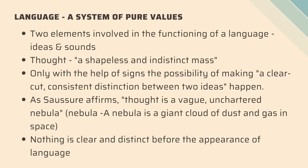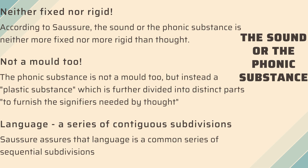A nebula is a giant cloud of dust and gas in space — something very vague and uncharted. Nothing is clear and distinct before the appearance of language, affirms Saussure. When he talks about the sound or phonic substance, according to Saussure, the phonic substance is neither fixed nor more rigid than thought. He says that the phonic substance is not a mold, but instead a plastic substance which is divided into distinct parts to furnish the signifiers needed by thought.